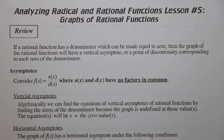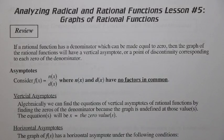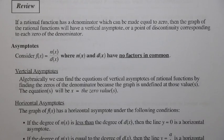We're talking about analyzing radical and rational functions, lesson number five. We're going to be talking about graphs of rational functions, but we need to review some things. If a rational function has a denominator which can be made equal to zero, then the graph will have a vertical asymptote at that point.